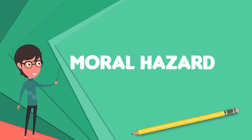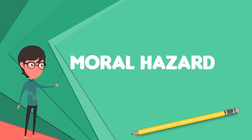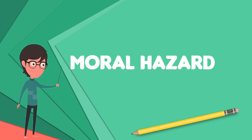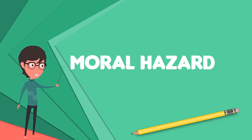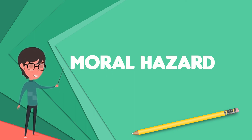Moral hazard also arises in a principal-agent problem, where one party, called an agent, acts on behalf of another party, called the principal. The agent usually has more information about his or her actions or intentions than the principal does, because the principal usually cannot completely monitor the agent. The agent may have an incentive to act inappropriately if the interests of the principal are not aligned.